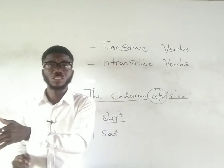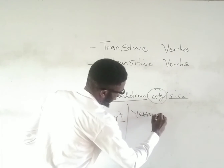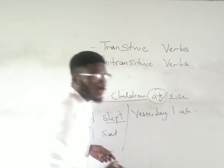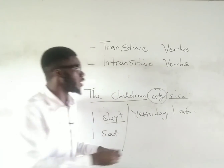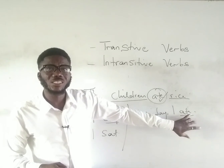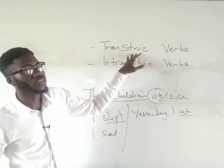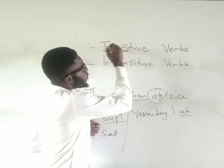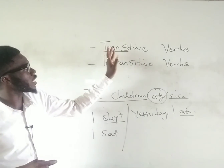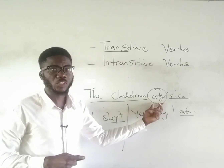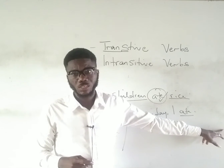Take note that there are situations where a particular verb can be transitive in one sentence and intransitive in another. For instance, if somebody says 'Yesterday I ate,' that is complete information. The person does not need to add an object. In this situation, the verb 'ate' is intransitive because it does not require any object for its meaning to be complete. Think about the prefix 'trans-' — a transitive verb means the action has to be transferred to an object, while an intransitive verb means the action does not need to be transferred to any object.